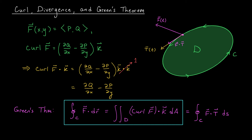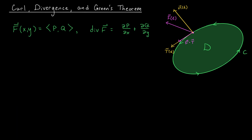Now I wonder: what would we get if we integrated the component of force moving perpendicular to the tangent vector instead? This force doesn't contribute to the particle's movement along the curve, so this integral represents a completely different quantity — and as we'll see, it has something to do with divergence. We want to integrate the component of our force in the direction of the unit normal vector n, which is f dot n. So we're interested in the line integral along c of f dot n ds, which we can rewrite as the integral from a to b of f dot n times the norm of r′(t) dt.